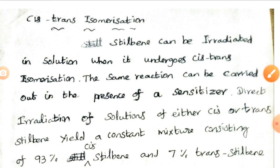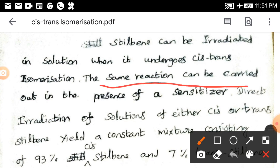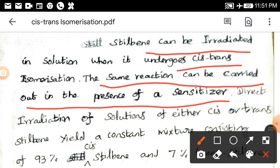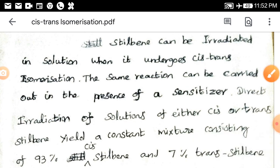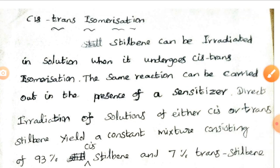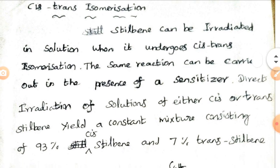The same reaction can also be carried out in the presence of a sensitizer — that is another important thing in photochemistry. So, first, we say stilbene is irradiated to form cis-trans. Second, the same reaction can be carried out using a sensitizer. Direct irradiation of solutions of either cis- or trans-stilbene yields a constant mixture consisting of 93% cis-stilbene and 7% trans-stilbene.